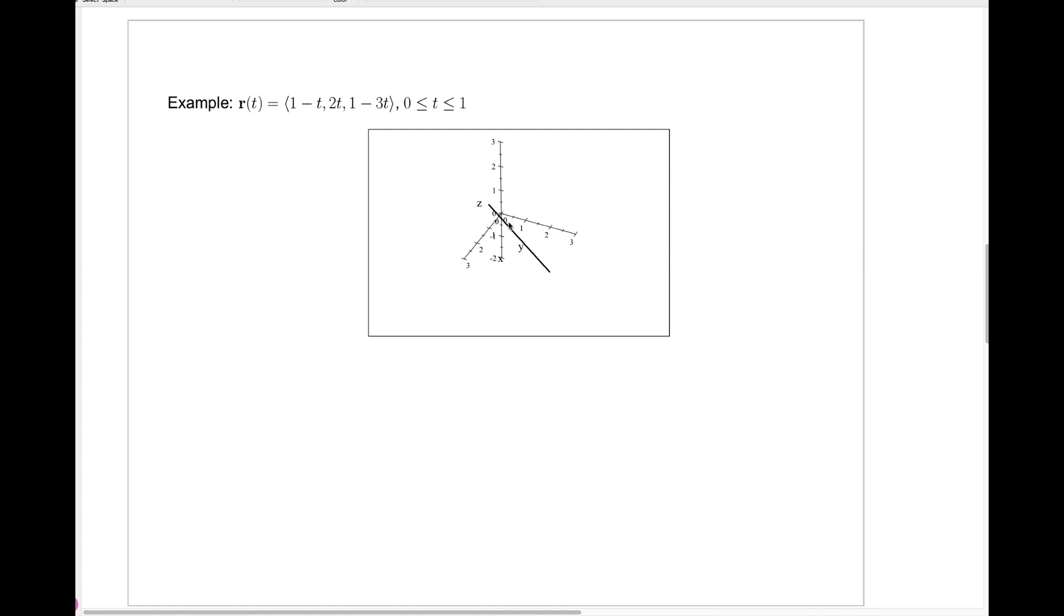Here's a much simpler example. We have r of t, our vector function r of t is the vector 1 minus t, 2t, and 1 minus 3t. And I've drawn the picture here when t goes from 0 to 1. So r of 0 is just the vector 1, 0, 1. That's right here. x equals 1, y equals 0, z equals 1.